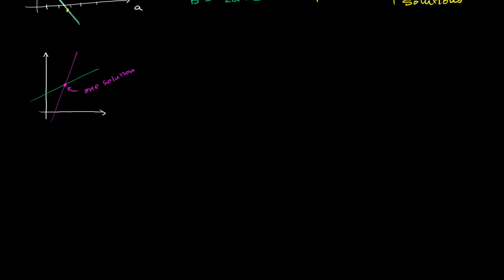This means that the two constraints are consistent, and the two constraints are independent of each other — they're not the exact same line. We call this consistent and independent.